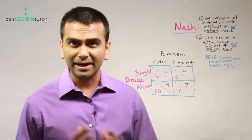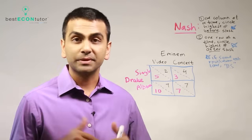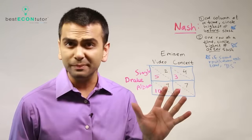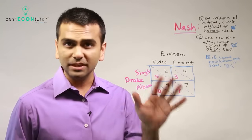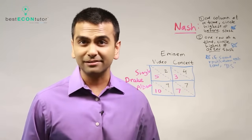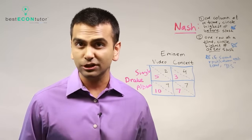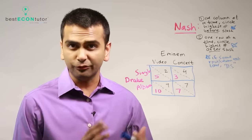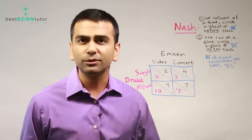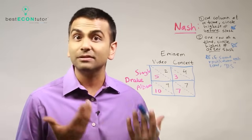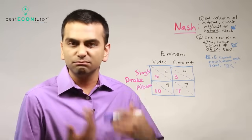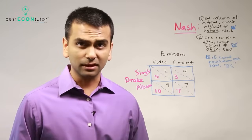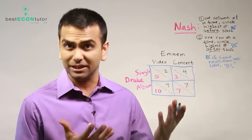Now let's talk about game theory - what it actually is. Most of the questions you'll be given will have some sort of a payoff matrix, as this is called. It's a table like this, and you'll mostly be asked to find what's called the Nash Equilibrium. There are two easy steps you can do to solve for it. We'll talk through why they even make sense so that you'll become procedurally fluent at it.